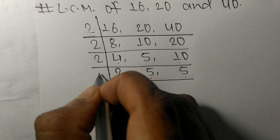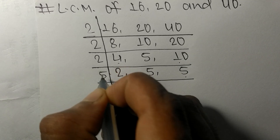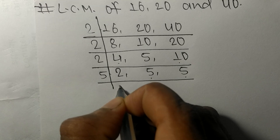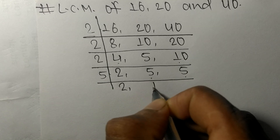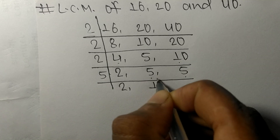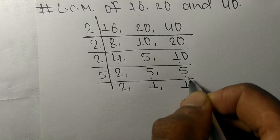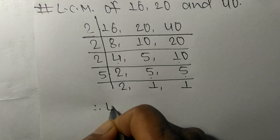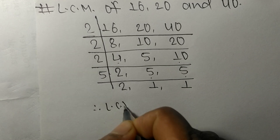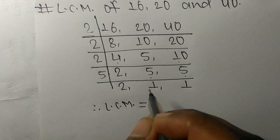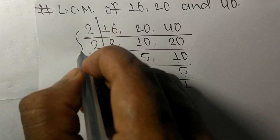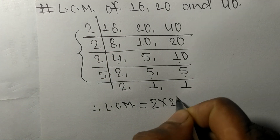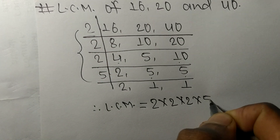Now both 5s are exactly divisible by 5: 2 is not divisible so it stays the same, 5 times 1 equals 5, and 5 times 1 equals 5. So the LCM is calculated from this side as 2 times 2 times 2 times 2 times 5.